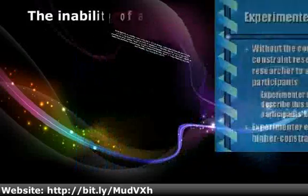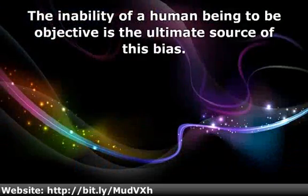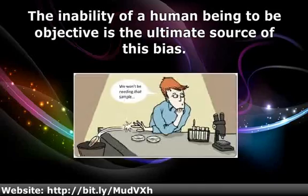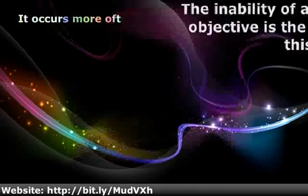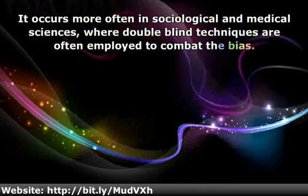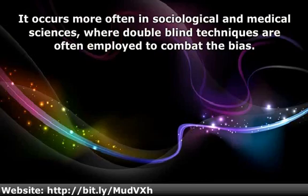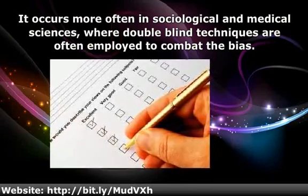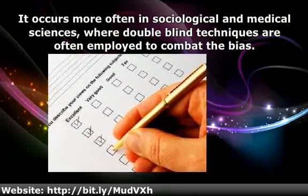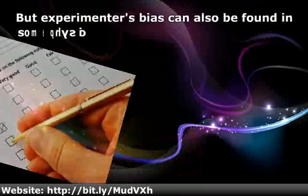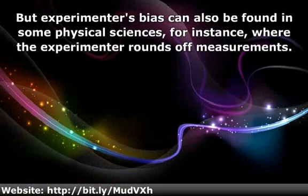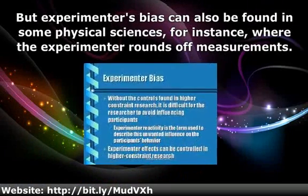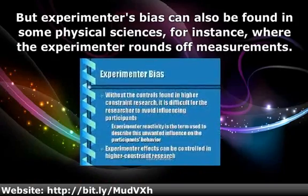The inability of a human being to be objective is the ultimate source of this bias. It occurs more often in sociological and medical sciences, where double-blind techniques are often employed to combat the bias. But experimenter's bias can also be found in some physical sciences — for instance, where the experimenter rounds off measurements.